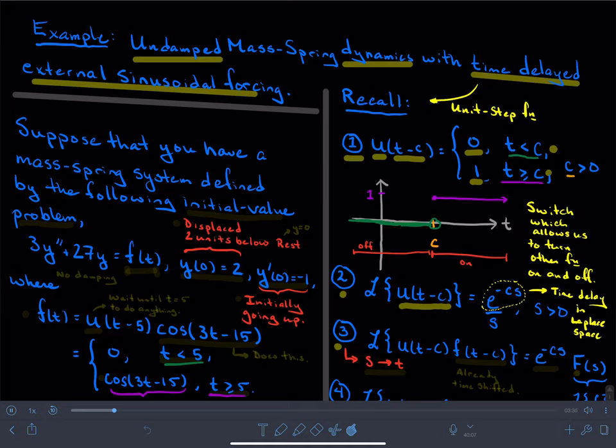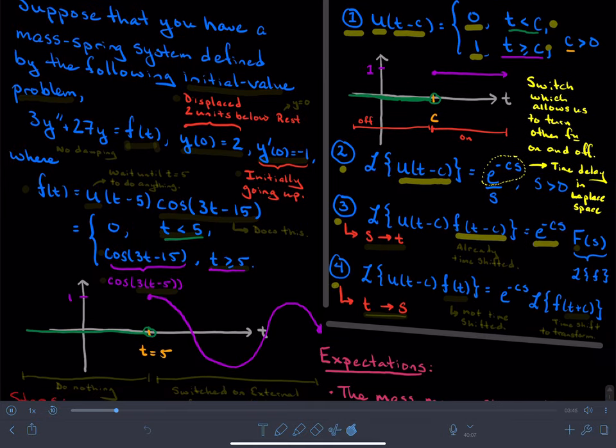Now what we might want to do is take the step function and multiply it by another function so that it acts as the switch for this other function, and what we see is again the exponential multiplier giving a time delay or showing us a time delay in Laplace space, and then we get the Laplace transform of the function.